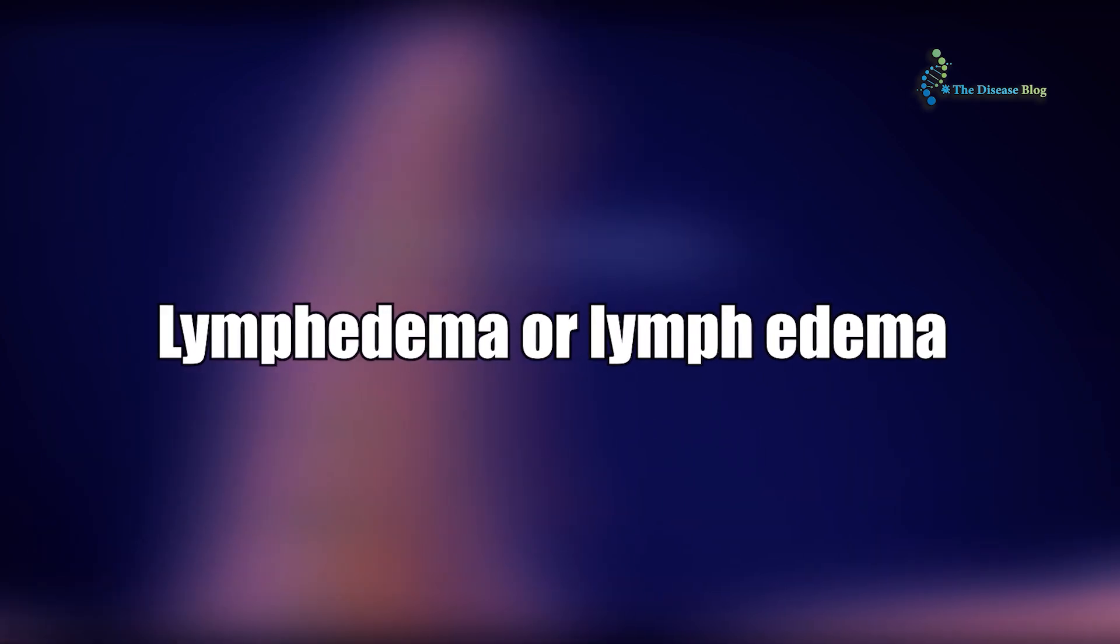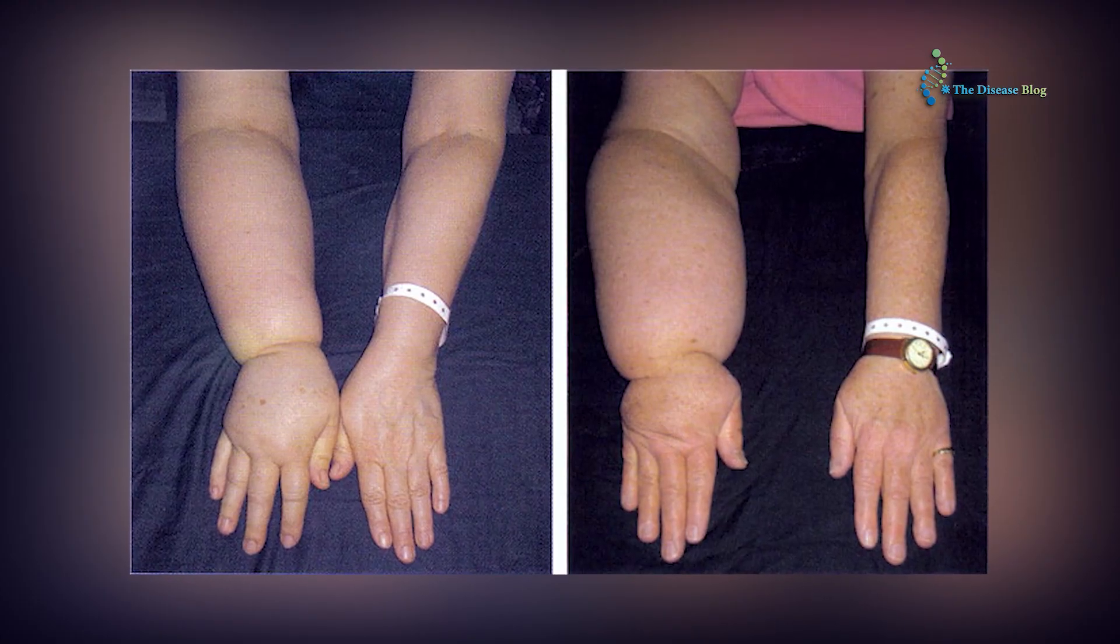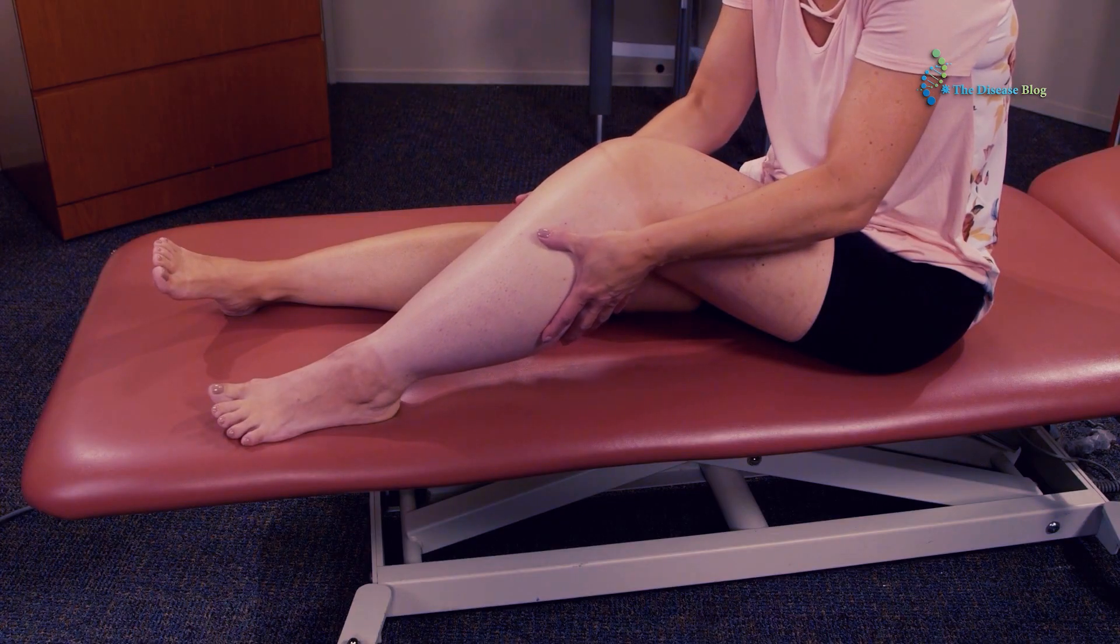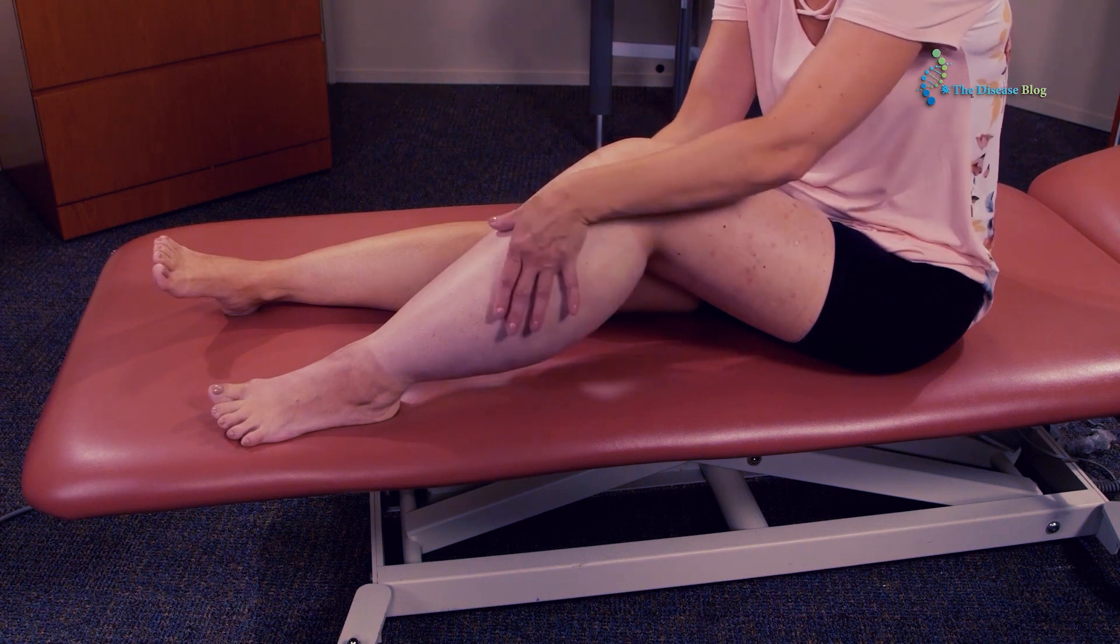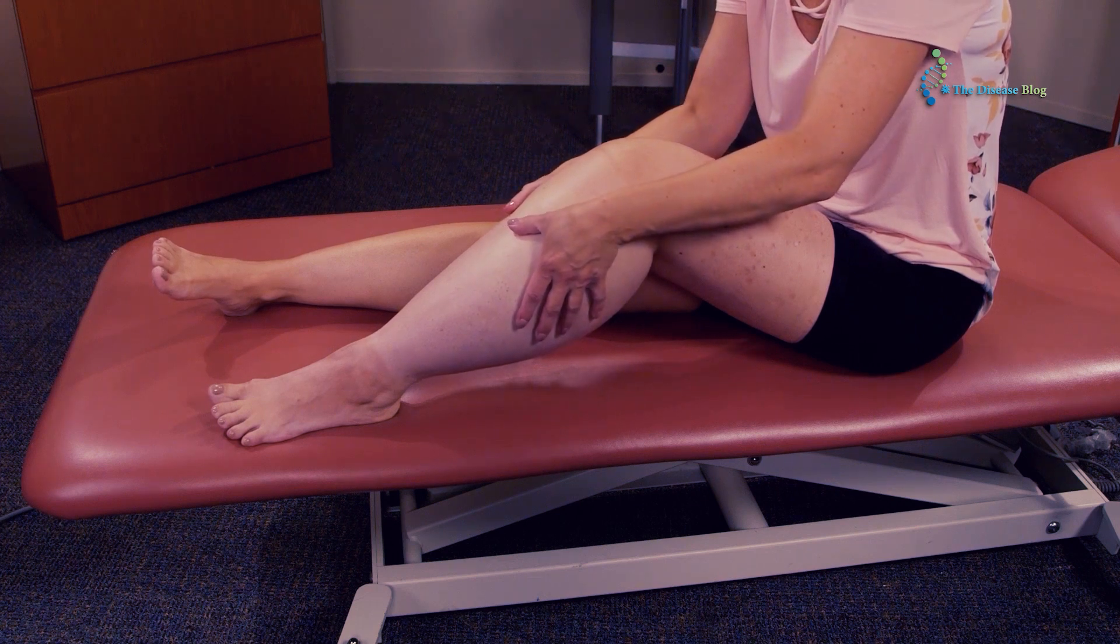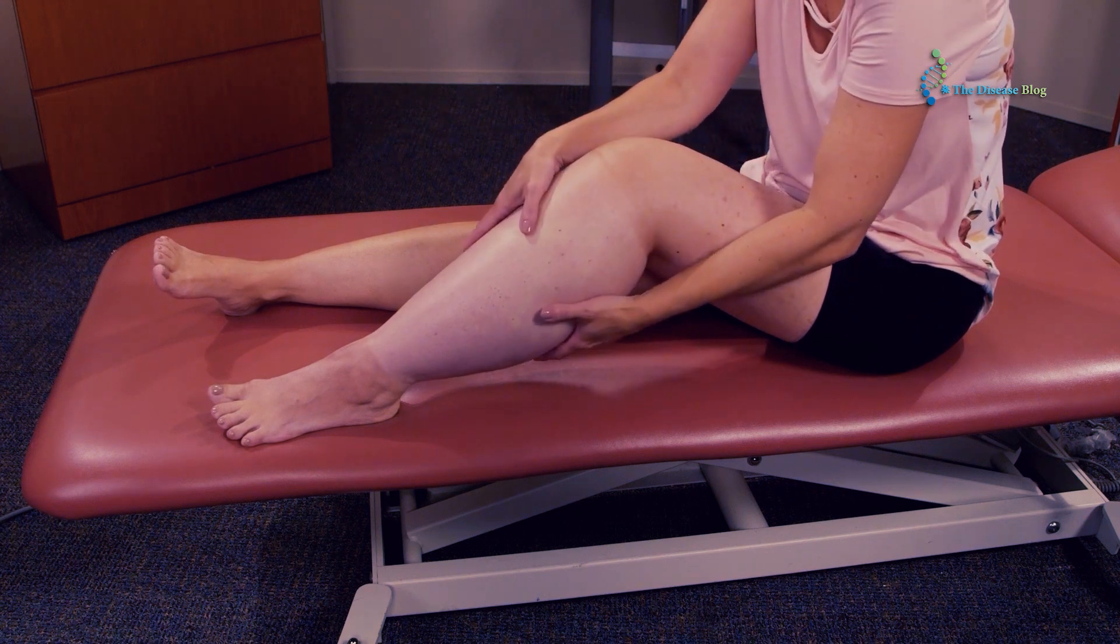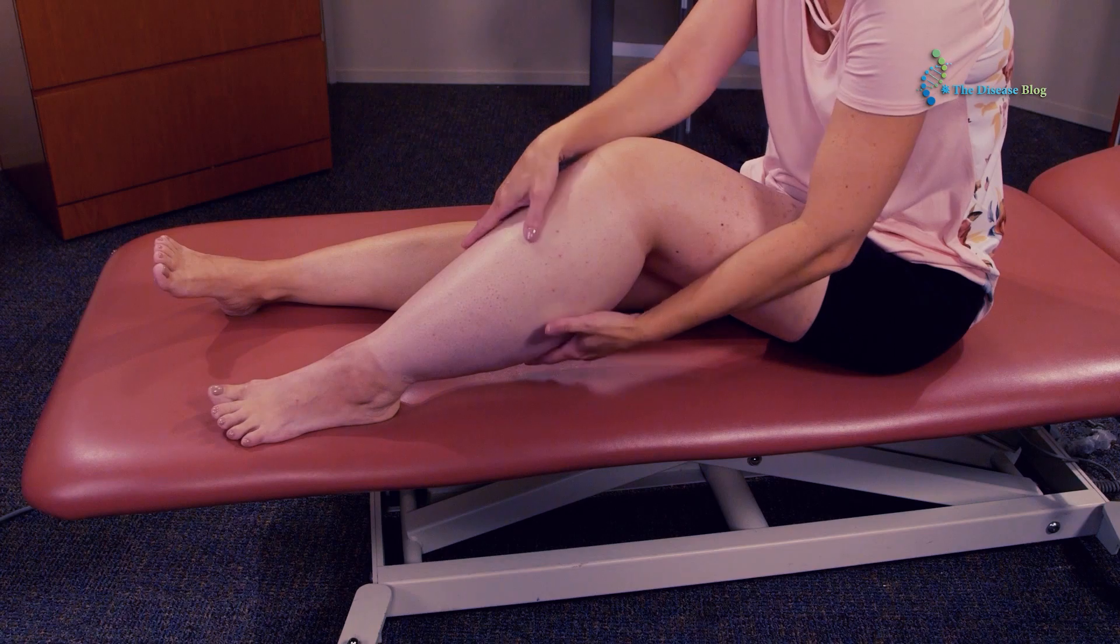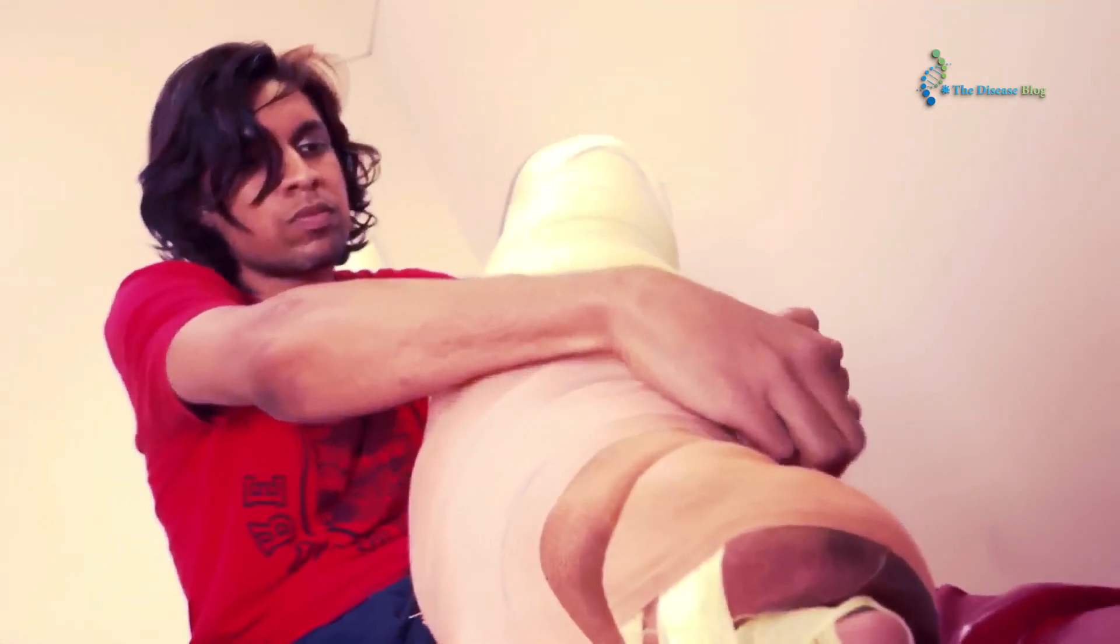Besides that, microfilariae and adult worms block the lymphatic vessels, due to which excessive lymph accumulation occurs in the lymphatic system. This condition, known as lymphedema, is the most apparent symptom of this illness. Simultaneously, edema is also observed, which leads to severe swelling of arms and legs or any of the body parts like breasts or genitals.